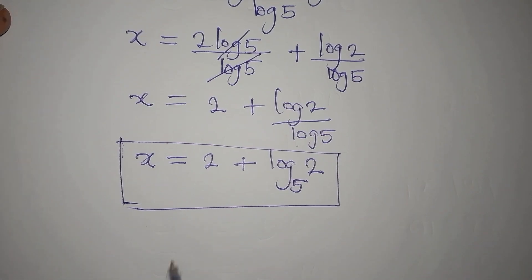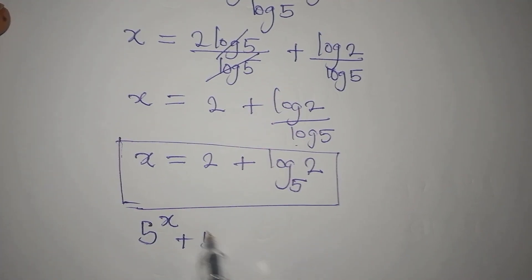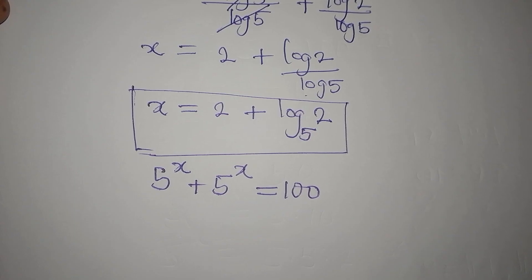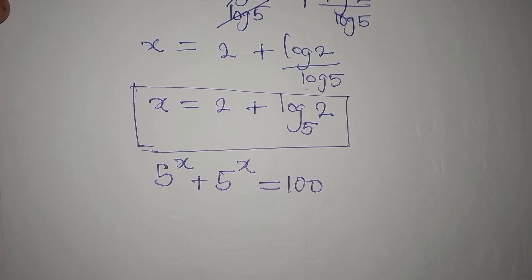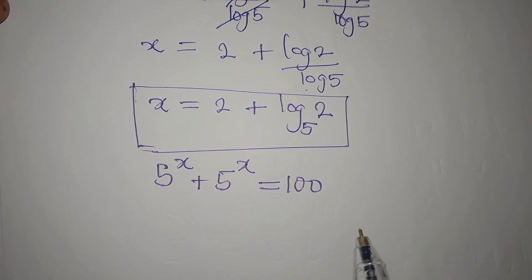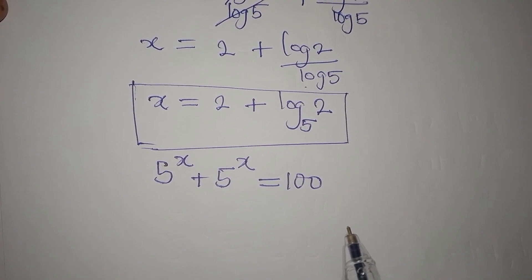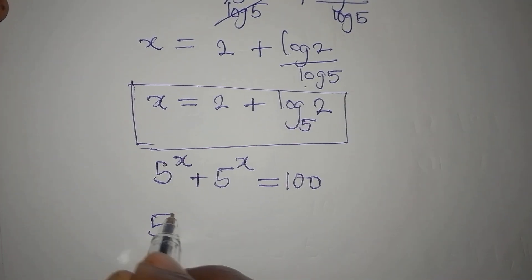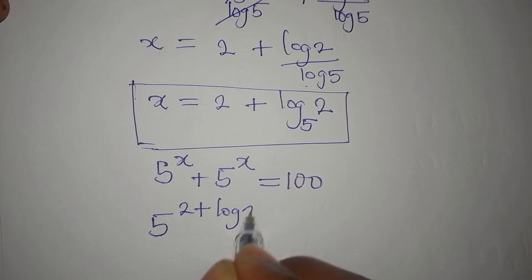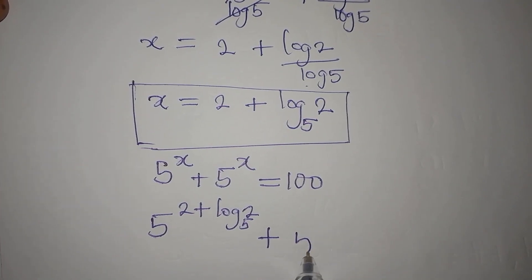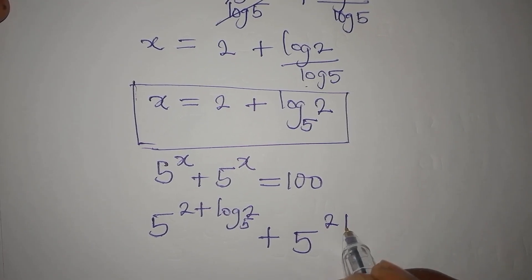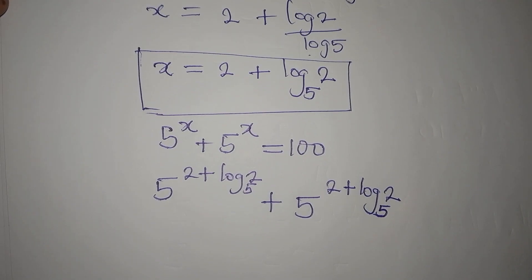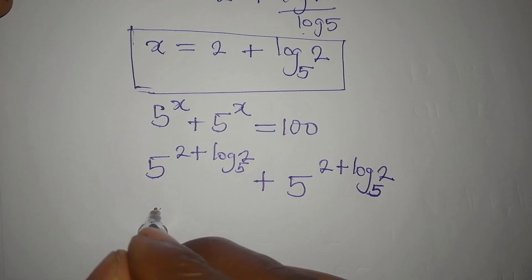Remember the original equation is 5 to the power of x plus 5 to the power of x equals 100. When we are done solving, we always verify to make sure we are correct. Substituting x equals 2 plus log 2 to base 5, we have 5 to the power of (2 plus log 2 to base 5) plus another 5 to the power of (2 plus log 2 to base 5).